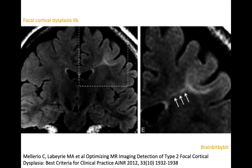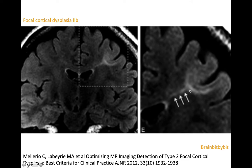On MRI, on T2 and FLAIR images as in this case, in FCD type 2, there is hyperintensity of the cortex and subcortical white matter, blurring of the grey-white matter interface, thickening of the cortex, and sometimes you see a transmantle sign, which is high signal extending from the ventricle all the way up to the cortical abnormality.